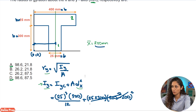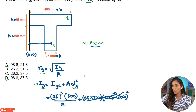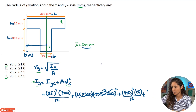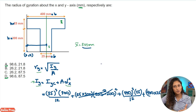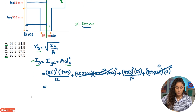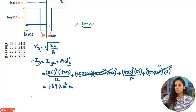For shape two, Iyc equals b³h over 12 where b is 400 and h is 25. So we have 400³ times 25 divided by 12, plus the area (400 times 25) times dx². Again dx is 200 minus 200, which is zero, so the parallel axis term is again zero. Plugging in all numbers gives Iy equals 1.34 times 10 to the power of 8 mm⁴.